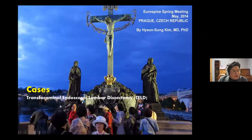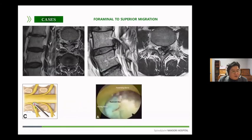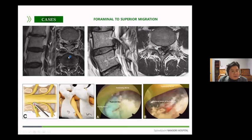Let's look at cases found in transforaminal endoscopic lumbar discectomy. Here we can see the foraminal-to-supra migrated disc. Foraminal-to-supra migrated discs are often difficult in open surgery. However, in transforaminal endoscopic lumbar discectomy, if we use the foraminal route, damage to the surrounding structures can be minimized while resolving this problem, as seen here.